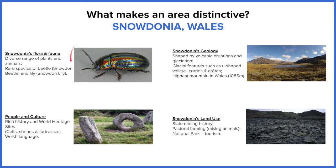Snowdonia is also known for its flora and fauna — its vegetation and animals. There are two unique species to Snowdonia: the Snowdonian beetle and the Snowdonian lily, which you wouldn't find anywhere else in the UK. Looking at peoples and cultures, going way back in time we have Celtic shrines and fortresses, and even today the Welsh language — Welsh medium — is spoken there.